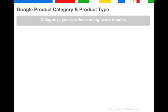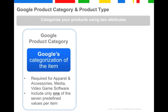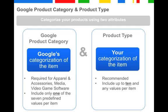You can also download the taxonomy in a spreadsheet. The new Google product category and the already existing product type both serve to categorize and classify your products using Google's taxonomy. Google product category is Google's categorization of the item, while product type is your categorization of the item. Product category is required and has to use only one of the seven predefined category values per item. Product type is not required but strongly recommended—it enables you to categorize your item using your own values or by extending the taxonomy, and you can submit up to 10 values per item.